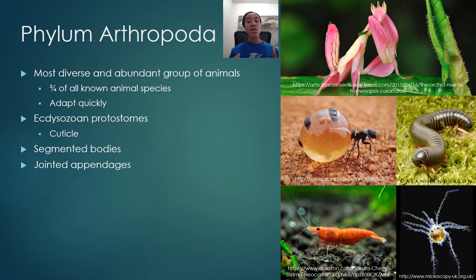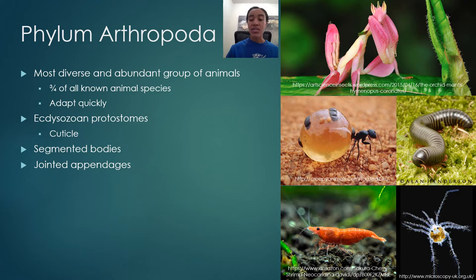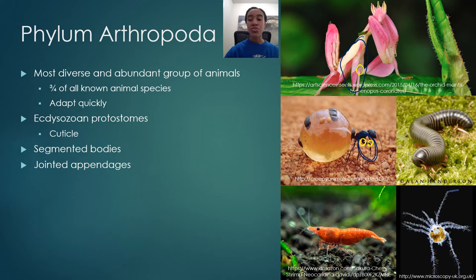Arthropods are ecdysozoan protostomes - they must shed their outer cuticle to grow, and they develop mouth first. They have segmented bodies, though segmentation in arthropods differs from what we see in annelids - we'll discuss that shortly. They also have jointed appendages, visible clearly in these pictures. In this honeypot ant you can see joints on the front leg, and in this orchid mantis you can clearly see joints in their legs. They have a variety of different types of appendages.